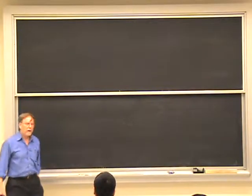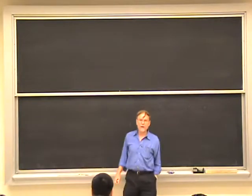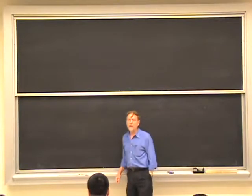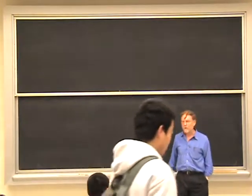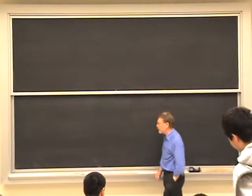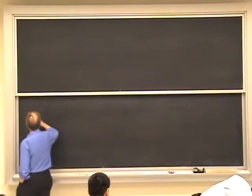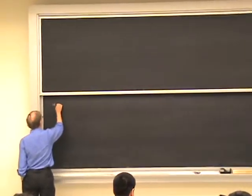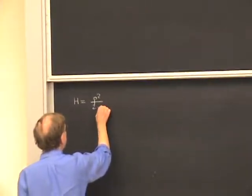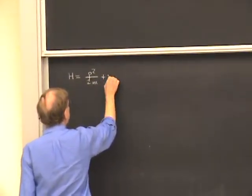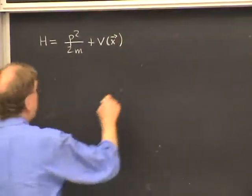I want to begin today with the Ehrenfest relations, which are one of the ways of understanding the classical connected quantum mechanics. To be specific, we'll deal with a Hamiltonian in three dimensions, which is a kinetic plus potential Hamiltonian, a common case like this, 3D.